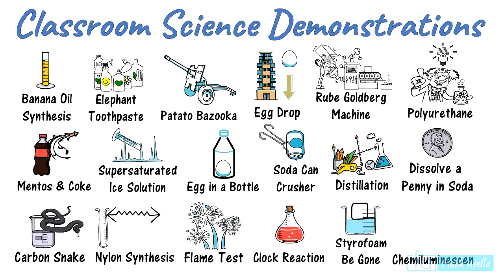Lastly, chemiluminescence. Get a glow stick, which is constructed so that when you snap it, both chemical parts mix together and make a fabulous glow. Separate both liquids and mix them together in a petri dish — you'll see a beautiful bright green. Make sure you turn the lights off when you do this demonstration.